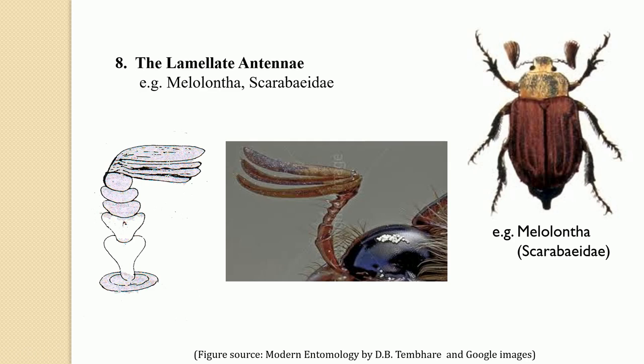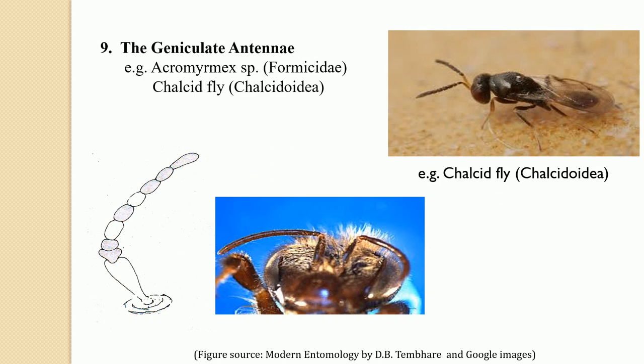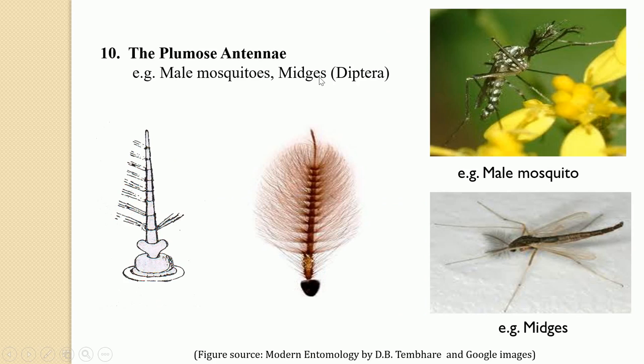The next type is the geniculate antennae. In the geniculate antennae, the whole antennae is bent completely from the scape-pedicel joint. This is the scape and this one is the pedicel — from that region the antennae is completely bent. If such a bent antennae is found, or there is an angle between the scape and pedicel, such antennae is referred to as the geniculate antennae. This geniculate antennae is found in chalcid flies belonging to the Chalcidoidea, and also in the genus Camponotus belonging to the family Formicidae.